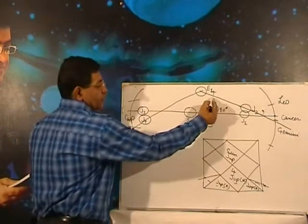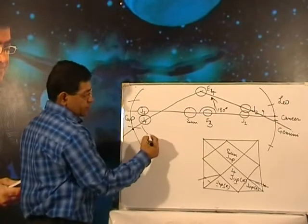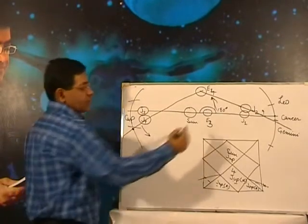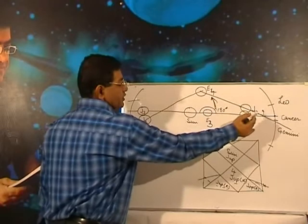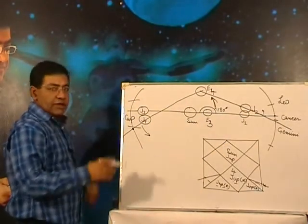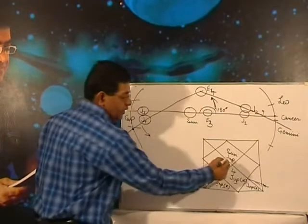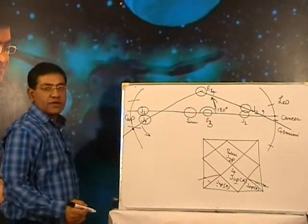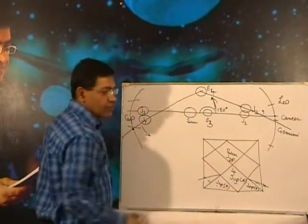Earth is also moving in the same direction and Jupiter is also moving in the same direction. Previously, it was moving in the same direction but it was moving slower, so it was looking that it is moving backwards. Now when Jupiter is here, it will move faster. In Hindi we say Atichari, or moving fast.